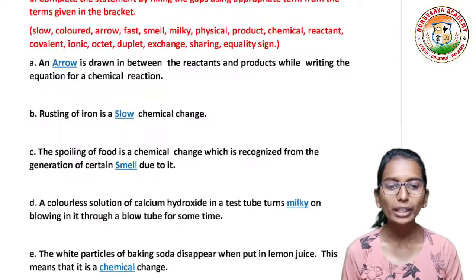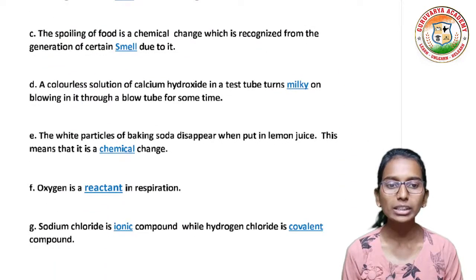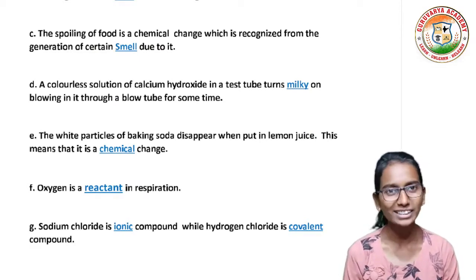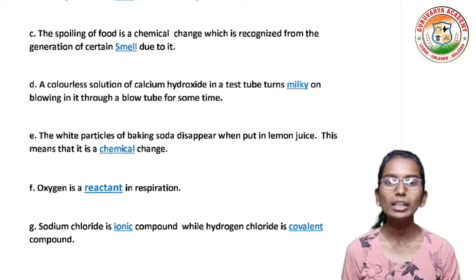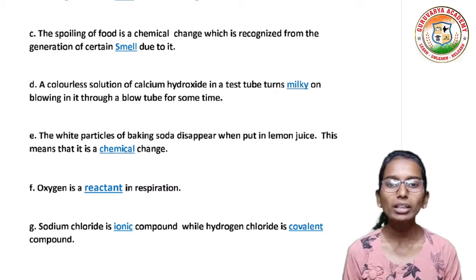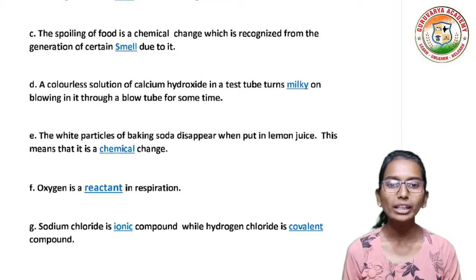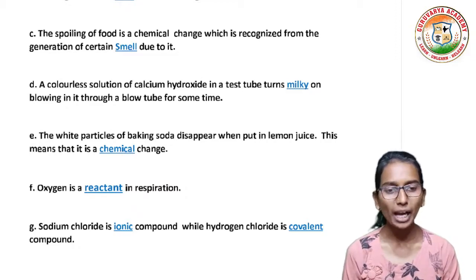Third blank: the spoiling of food is a chemical change which is recognized from the generation of certain dash due to it. Answer: Smell. Fourth blank: a colorless solution of calcium hydroxide in a test tube turns dash on blowing in it through a blow tube for some time. Answer: Milky.